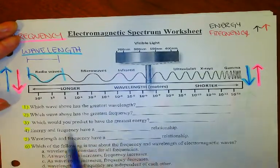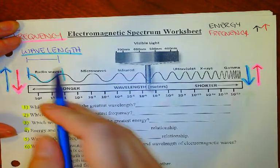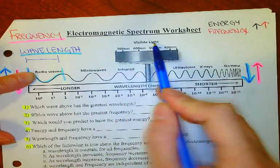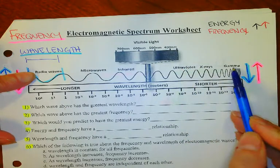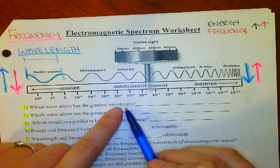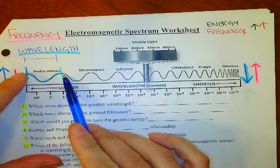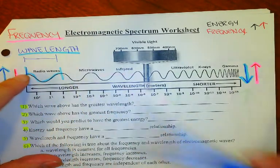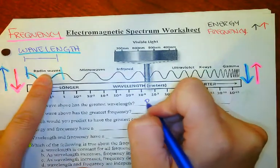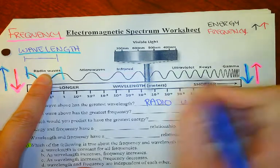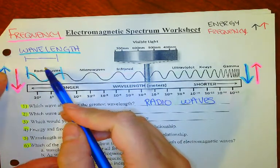So which wave above has the greatest wavelength? Our choices are radio wave, microwave, infrared waves, visible light, ultraviolet light, x-rays, or gamma rays. My greatest wavelength, I'm showing you right here, that's the biggest wavelength. There's the longest distance before it starts repeating. So I would say radio waves.